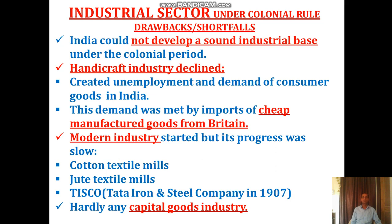Some modern industry started during the colonial period, but its progress was slow. For example, cotton textile mills, jute textile mills, and Tata Iron and Steel Company was started in 1907. Some sugar mills were also started, but the progress was slow.